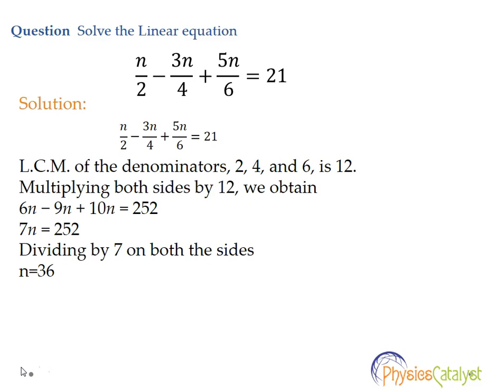Now we need to multiply 12 on both sides. So multiplying 12 on both sides we get 6n minus 9n plus 10n is equal to 252. Now simplifying the same terms we get 7n is equal to 252. Dividing by 7 on both sides we get n is equal to 32.